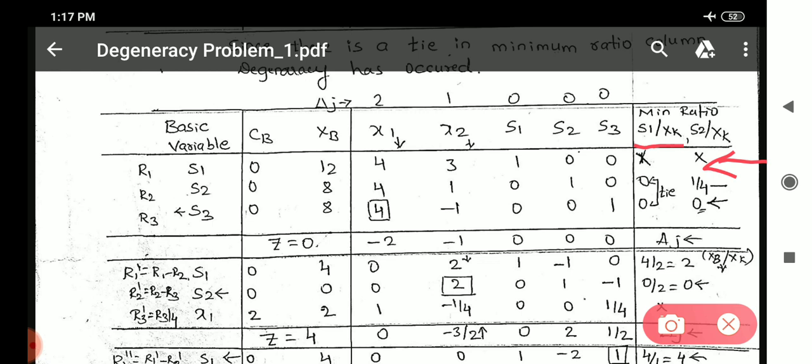There was a tie between second and third row, therefore we should consider only second and third row. Let us apply the formula s1 divided by xk. After applying that formula, s1 is 0 divided by 4, it will give 0. Again, 0 divided by 4 is 0.